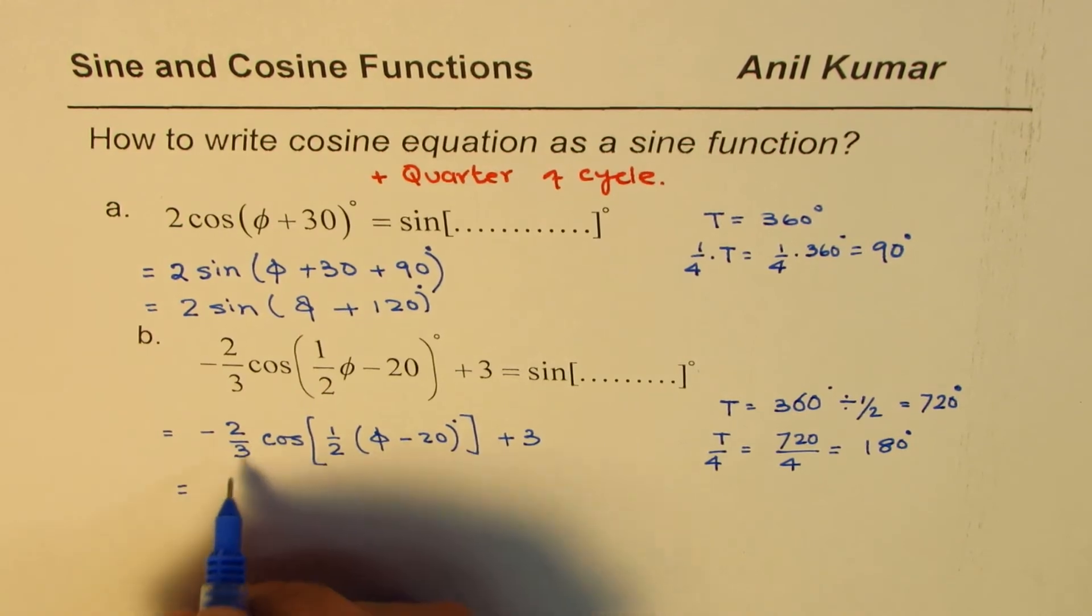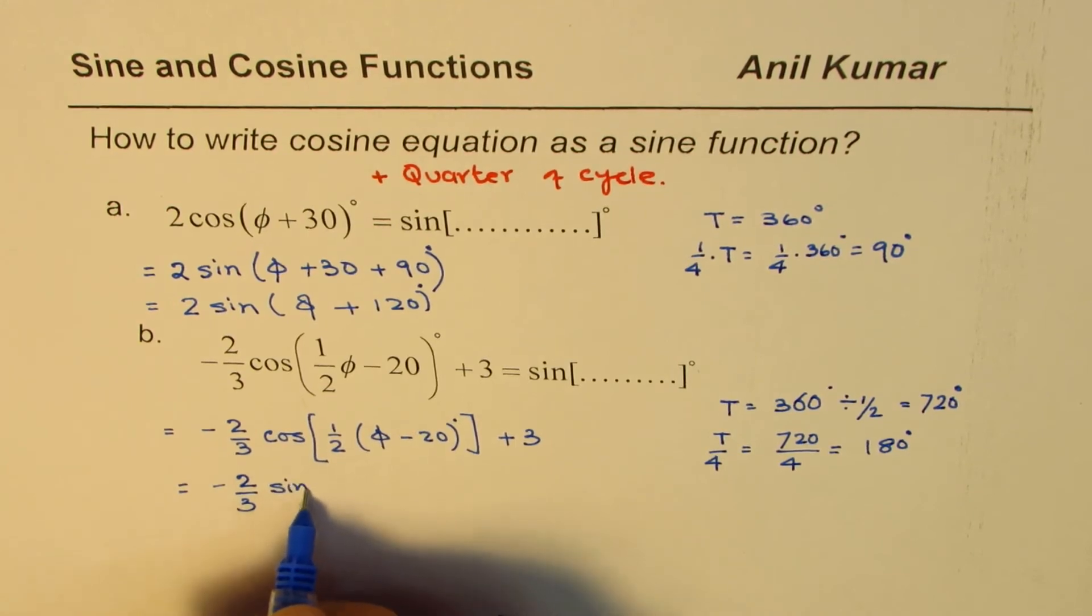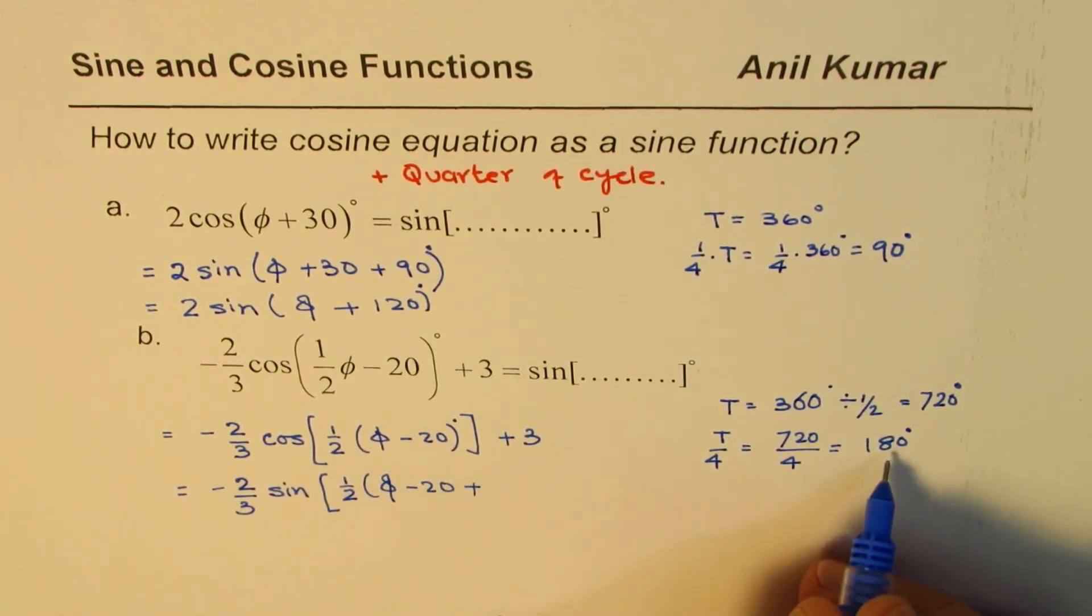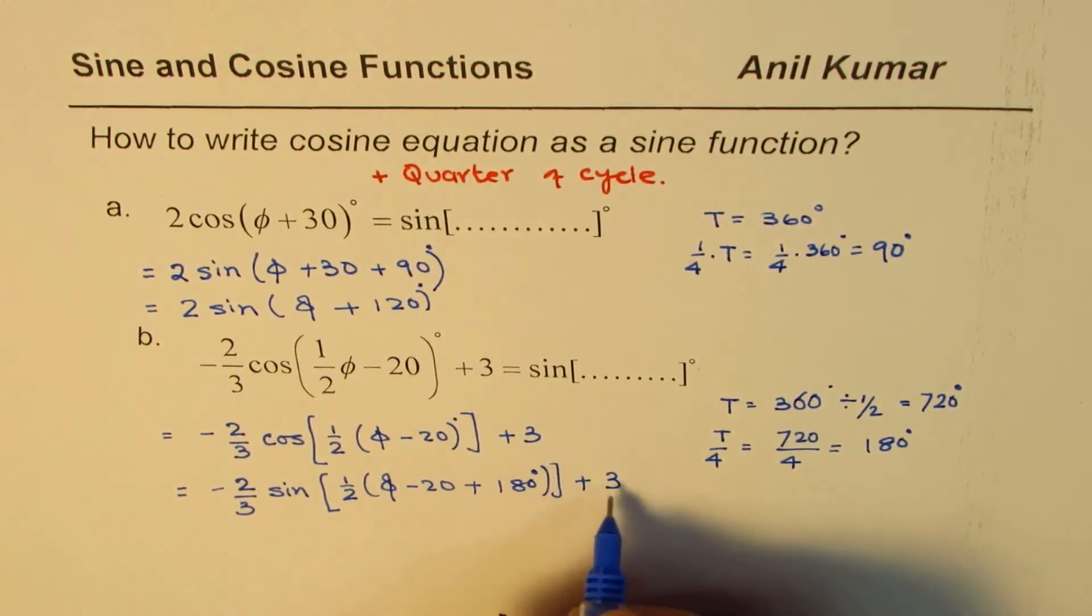So what we can do here is we can write this as a sine function as amplitude remains same. There is no change. There is only change in the phase shift. So it becomes 1/2 φ minus 20 plus this quarter of this time period. Vertical translation will also remain same.